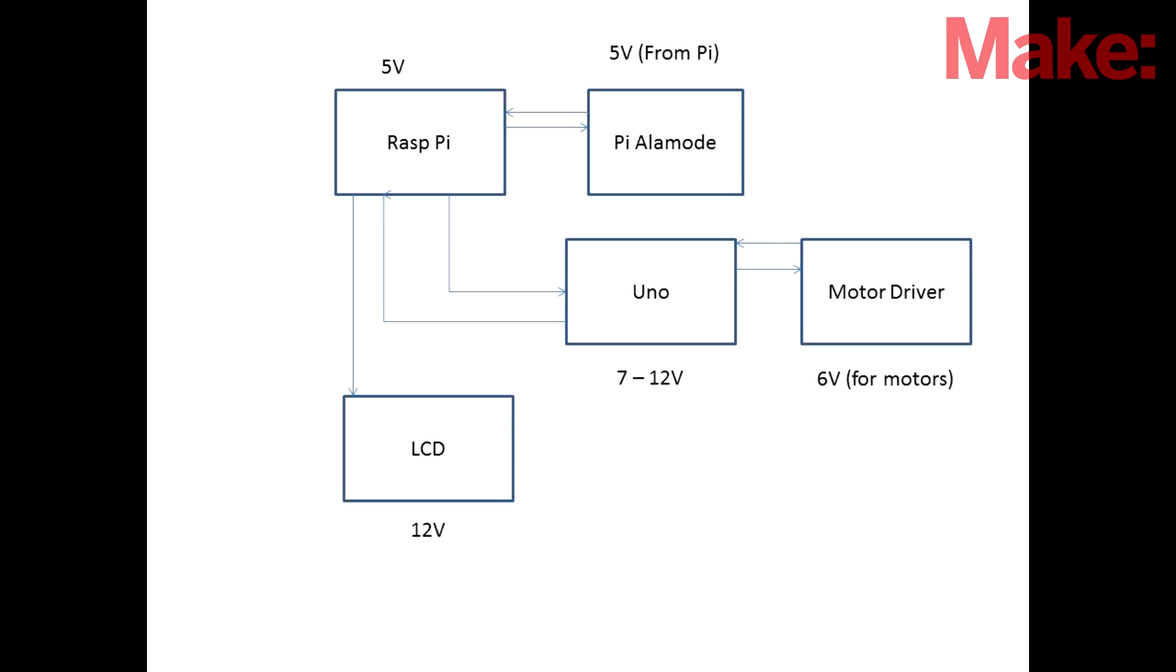This leads me to use a block diagram. I like using block diagrams because I can quickly see how things interconnect. It's not quite a schematic, but it gives me an idea of where signals are going. So here we see how the Raspberry Pi, the Alamode, the Uno, the motor driver, and the LCD all connect together in reference to data lines.